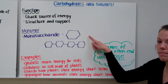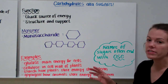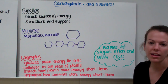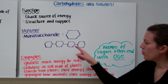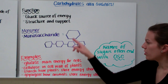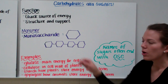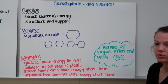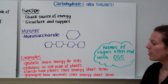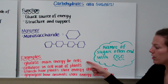The building block or the monomer of carbohydrates is called a monosaccharide. We put monosaccharides together to make carbohydrates. A monosaccharide usually looks like a stop sign or a ring, and when we put a bunch of them together, we make a carbohydrate. So this is one monosaccharide; this is four monosaccharides put together making a carbohydrate. Examples of carbohydrates include glucose, cellulose, starch, and glycogen. Glucose is one of the main sources of energy for cells.